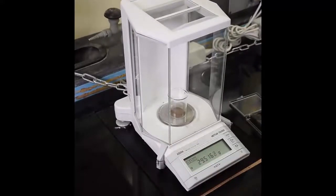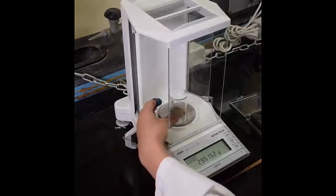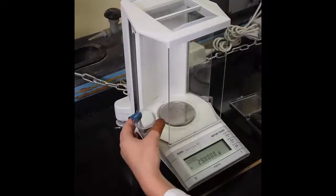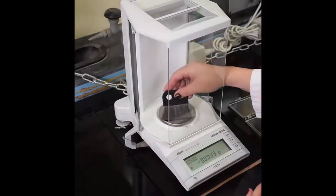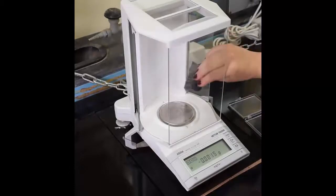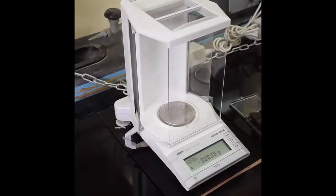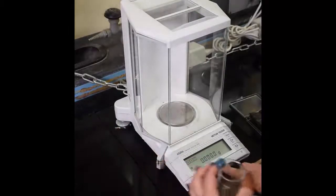Static charges can be dissipated by patting the inside of the balance compartment as well as the object being weighed with an anti-static brush. Make sure to re-zero before continuing to weigh.